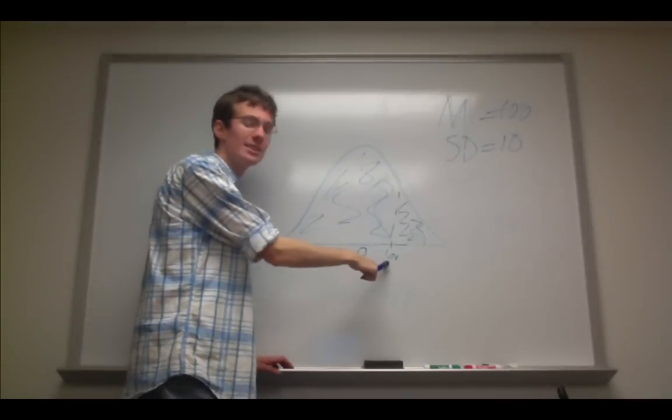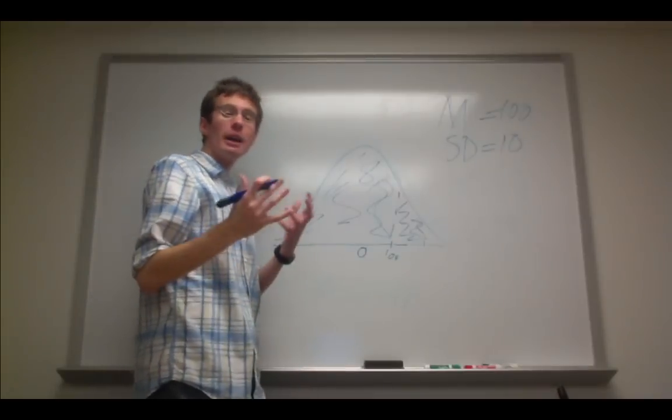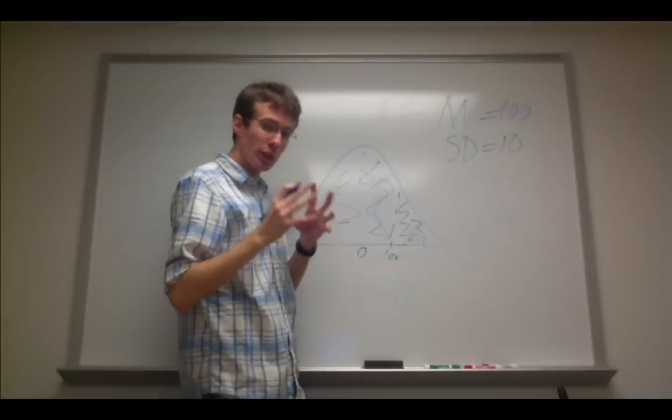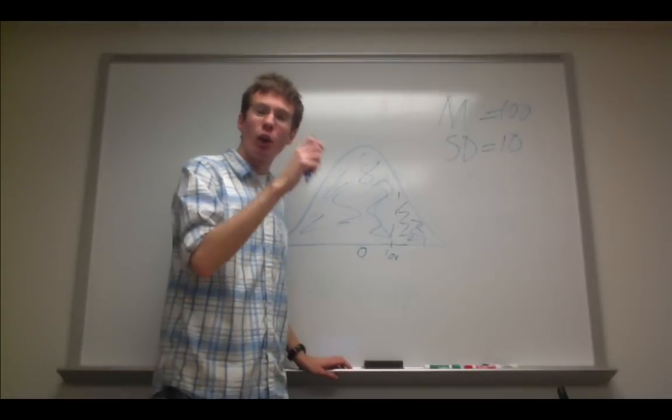In other words, this z-score is in the 85th percentile. And then to find the score, the raw score associated with that percentile, we simply convert this back to a raw score.